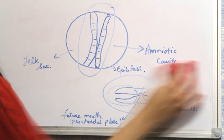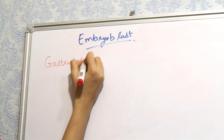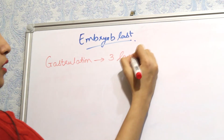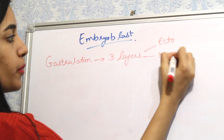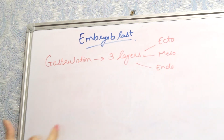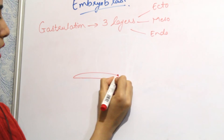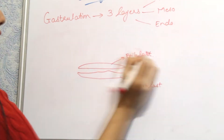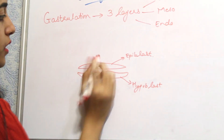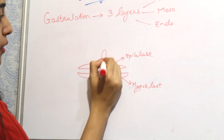After this, the process of gastrulation occurs. Gastrulation is the process which produces three layers: ectoderm (the outer layer), mesoderm (the middle layer), and endoderm (the innermost layer). The epiblast cells divide and form a primitive streak.